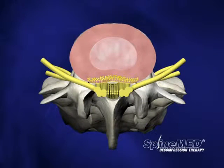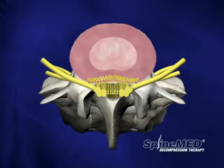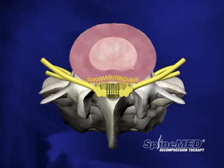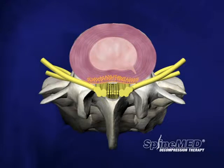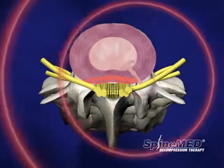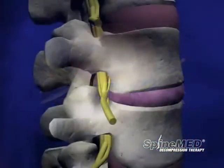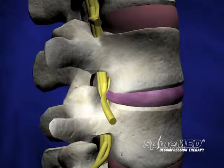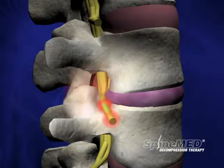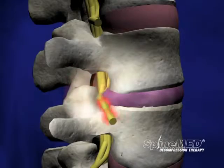Furthermore, disc dehydration causes the tough, pliable outer coating of the disc to become brittle and susceptible to cracks and tears that may lead to disc herniations. As we learned earlier, this outer layer of the disc has its own nerve supply, so small cracks or tears in the annulus alone may cause severe low back pain. As the tears worsen, the gel-like material of the nucleus begins to push through the annular wall, creating a disc bulge. As the condition progresses, the bulge applies physical pressure to the nerve root, often causing lower back pain and sciatica — a pain that radiates into the buttocks or down one or both legs.